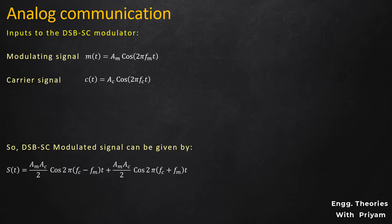Although the generated DSBSC modulated signal contains both upper and lower sidebands, for the SSBSC modulated signal we only need either the upper sideband or the lower sideband. So in order to generate the SSBSC modulated signal with either sideband, we need to pass this DSBSC modulated signal through a bandpass filter.